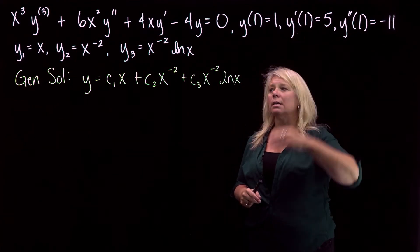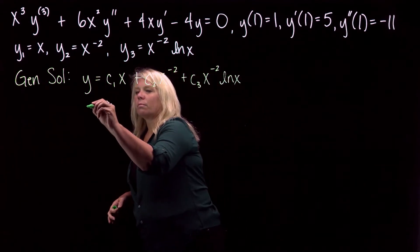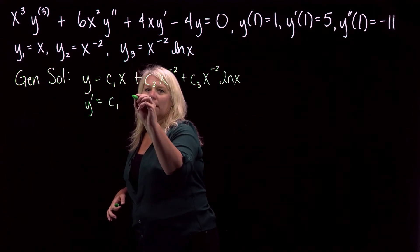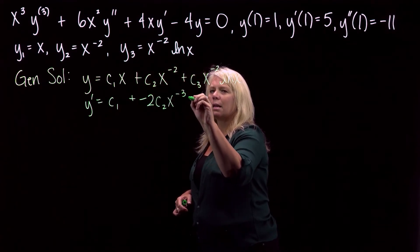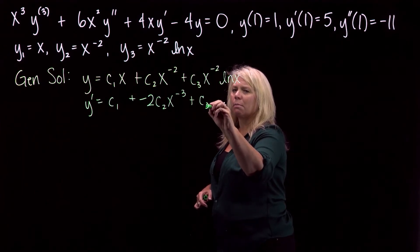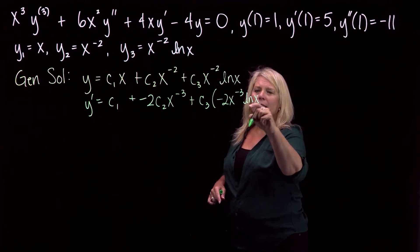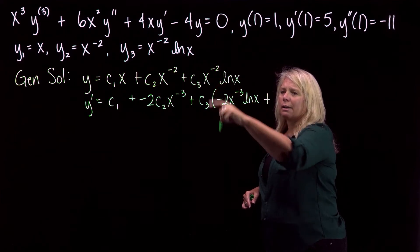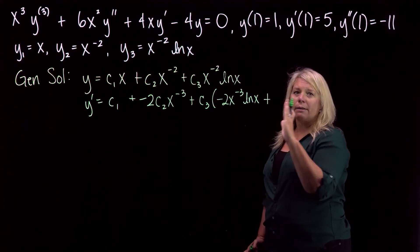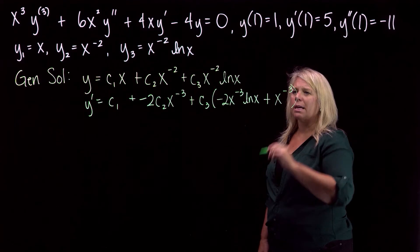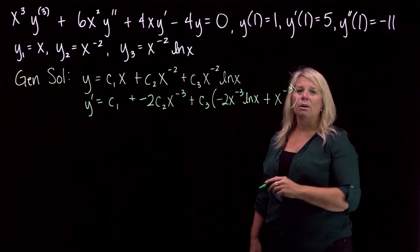We need to find y prime and y double prime so we can plug in the initial conditions. For y prime: c1 plus minus 2 c2 x to the negative 3. Then using the product rule on the third term: negative 2 x to the negative 3 times ln of x, plus x to the negative 2 times 1 over x, which simplifies to x to the negative 3.